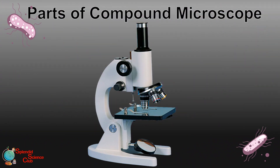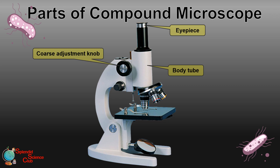Let's identify the main parts of a compound microscope. The eyepiece is on top — you have to keep your eye about one centimeter above the eyepiece to see through it. Below that is the cylindrical body tube, which is moved up and down by the coarse and fine adjustment knobs. The fine adjustment is used for little changes to focus the specimen.